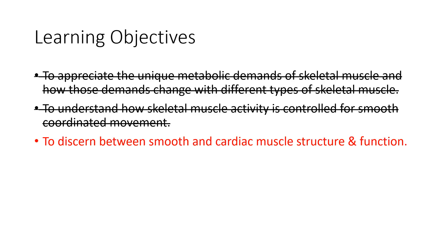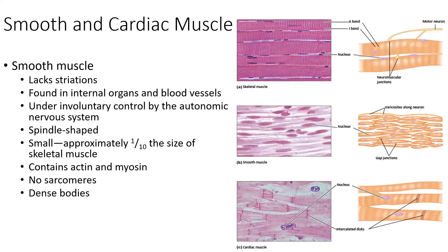We're going to compare smooth muscle to cardiac muscle and really zone in on distinguishing between the three types of muscle in terms of structure and their different contraction mechanisms. That's where we'll focus our attention in muscle physiology. We'll look at smooth muscle now and compare it to what we discussed with skeletal muscle, then pick this up again on Wednesday.